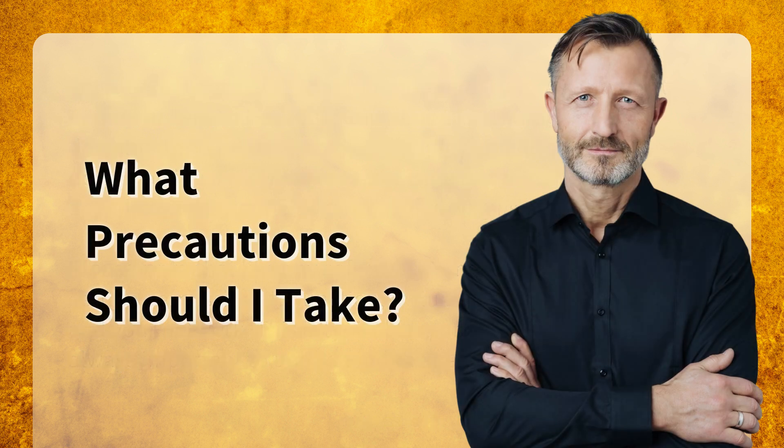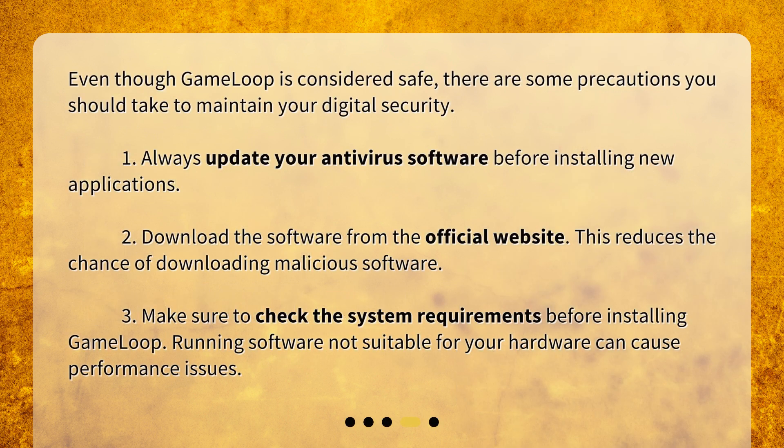What precautions should I take? Even though GameLoop is considered safe, there are some precautions you should take to maintain your digital security. 1. Always update your antivirus software before installing new applications. 2. Download the software from the official website — this reduces the chance of downloading malicious software. 3. Make sure to check the system requirements before installing GameLoop, as running software not suitable for your hardware can cause performance issues.